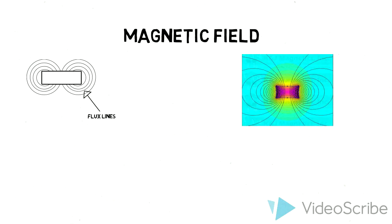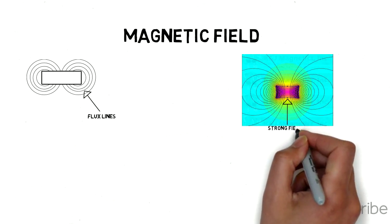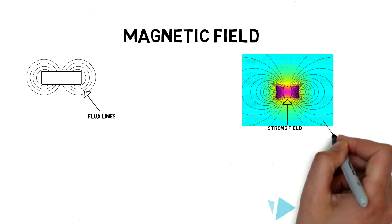A magnet's field is strongest at the surface, which is indicated by these darker colors and the lines being closer together. As the field spreads out, it gets weaker.